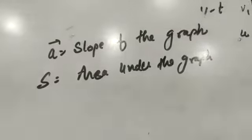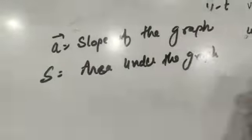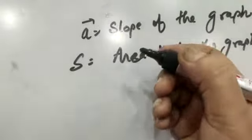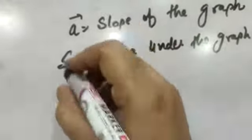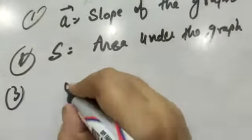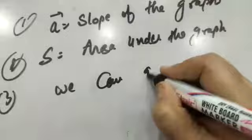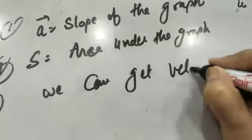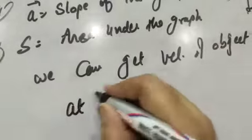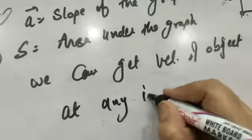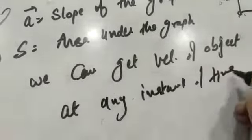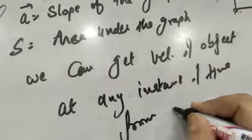Moreover, one more thing that we can get from this velocity-time graph is the velocity at any instant of time. So third, we can get velocity of the object at any instant of time from the graph.